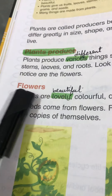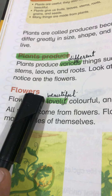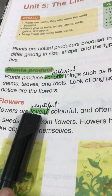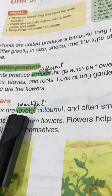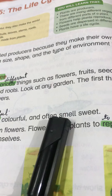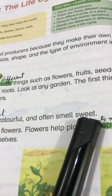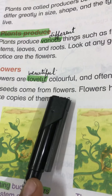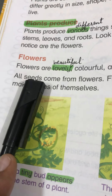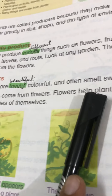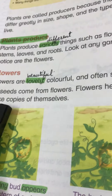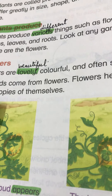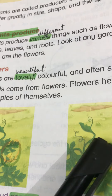So let's start — Flowers. سب سے پہلے ہم بات کریں گے flowers کی۔ What are flowers? Flowers سے تو ہر کوئی واقف ہے۔ Flowers are lovely and colorful — بہت خوبصورت اور colorful ہوتے ہیں — often smell sweet، اور کئی flowers کی خوشبو بھی بہت پیاری ہوتی ہے۔ All seeds come from flowers — جتنے بھی seeds ہیں، بیج جو ہوتے ہیں وہ سارے flowers سے آتے ہیں۔ Flowers help plants to reproduce — reproduce means to make new plants.